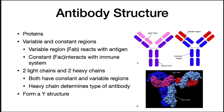B cells make antibodies, so let's talk about antibody structure. Antibodies are proteins and they have a Y structure — here's a cartoon of this Y structure, and here's what it actually looks like as a space-filling model. Antibodies have a variable and constant region. The variable region, FAB, reacts with the antigen. The constant region, FAC, interacts with the immune system. Antibodies have two light chains and two heavy chains, both with constant and variable regions. The heavy chain determines the type of antibody.